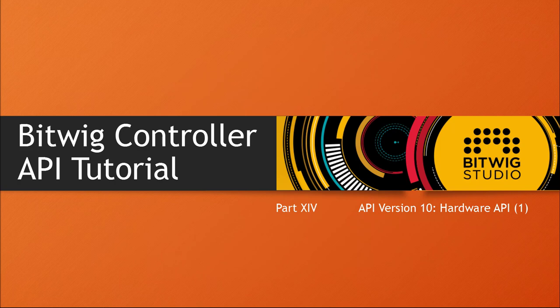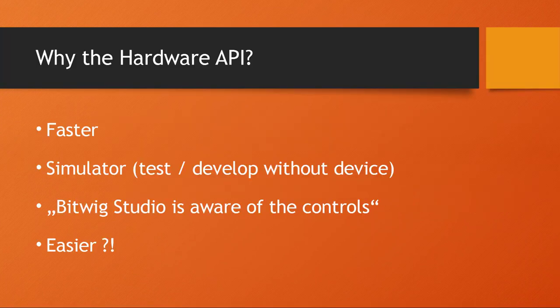Hello and welcome to the Hardware API tutorial. Lots of people have been waiting for this — it gets into the details of this new API which comes first with Bitwig 3.1. In a previous tutorial I already gave an overview of what is new in API version 10, and the Hardware API is one part of this. The question is: why would you need to use it? Before, you registered your MIDI handler, detected your MIDI commands yourself, then called any kind of command and translated that to a volume change or an action happening in Bitwig.